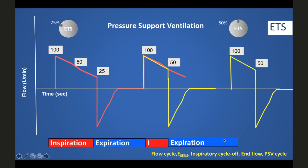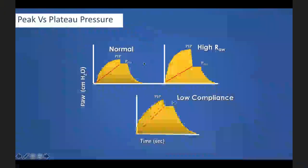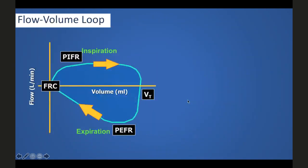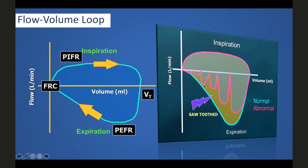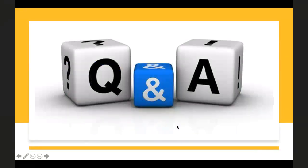A large difference between peak and plateau pressure indicates high airway resistance. If the plateau pressure itself is rising, it indicates low compliance — a restrictive issue such as ARDS, pneumothorax, or severe pneumonia. Flow-volume loops can identify peak expiratory flow rate, FRC, sawtooth appearance (indicating water trapping), or a scooped-out appearance indicating severe obstructive lung disease.